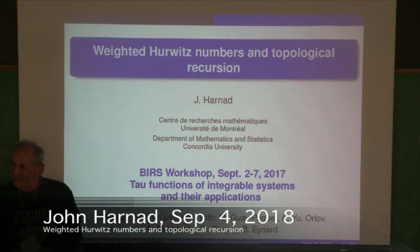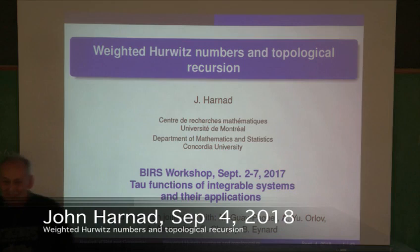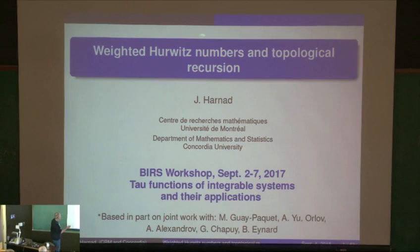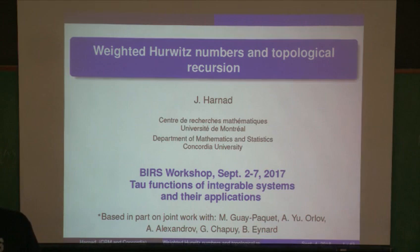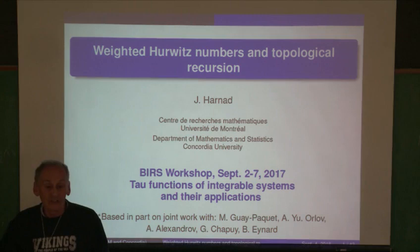It's a pleasure to be here again, and I thank my colleagues, the organizers. We're in the sort of midstream. Here's the title: I'm going to talk about weighted Hurwitz numbers and the connection with tau functions. The tau function will be a combinatorial generating function — not a generating function in the dynamical system sense, but in a combinatorial sense — so it's going to appear as a formal series whose coefficients are the interesting objects.